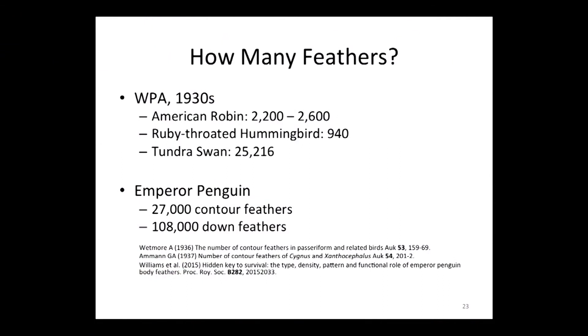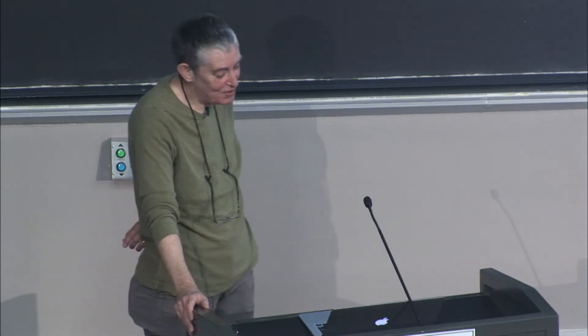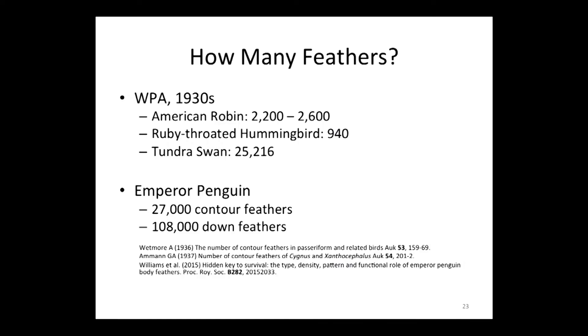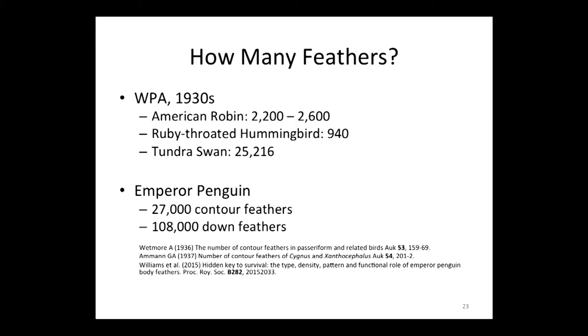Ornithology textbooks quote how many feathers a bird has. In the 1930s, the Works Progress Administration had people count the number of feathers on birds. A robin has about 2,500 feathers, a ruby-throated hummingbird has about 1,000, and a tundra swan has about 25,000. More recently, people looked at emperor penguins — instead of counting all feathers, they took a small sample and extrapolated for the surface area of the bird. Emperor penguins have around 135,000 feathers.